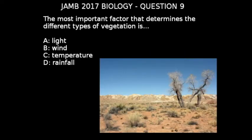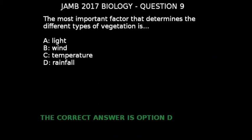So the most important factor that determines the different types of vegetation is rainfall. Thus the correct answer is option D.